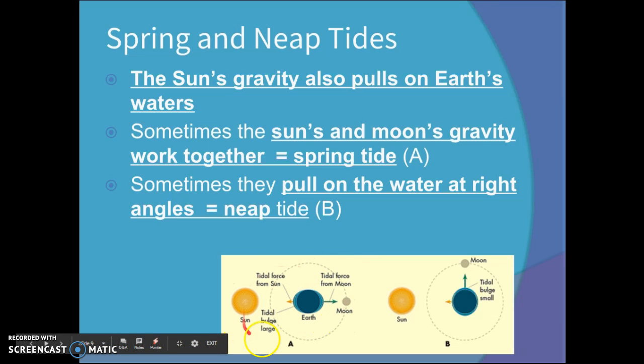So this would be an example of a spring tide. The Sun, the Moon, they're all in line, and they're helping create an even higher high tide. Versus when you have, let's say, a quarter Moon, the Sun and the Moon are no longer working together. They're kind of working against each other. That's when you're going to get a neap tide.